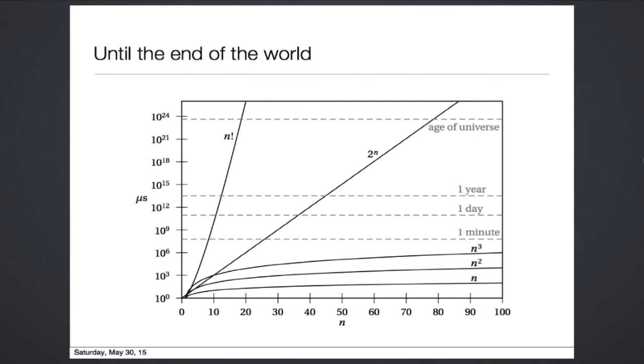In practice, it turns out that once you have a polynomial time algorithm, the constants often come down soon thereafter, turning it into an actually effective algorithm.